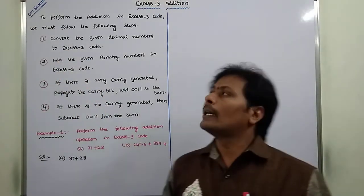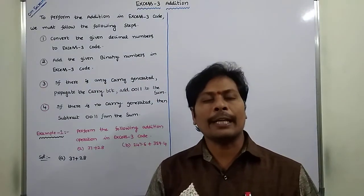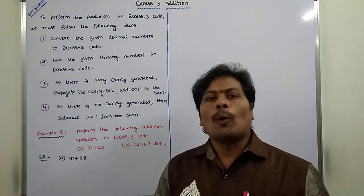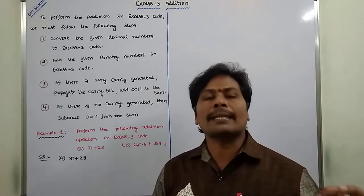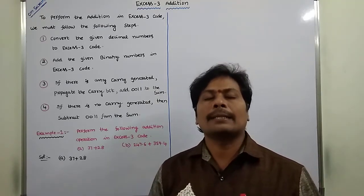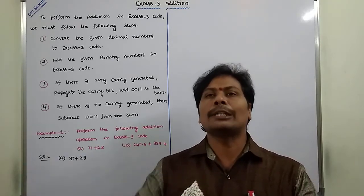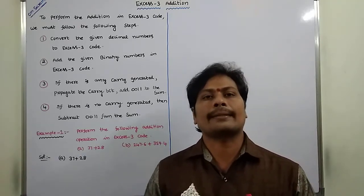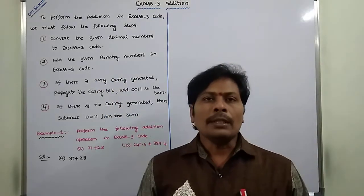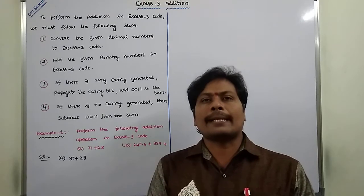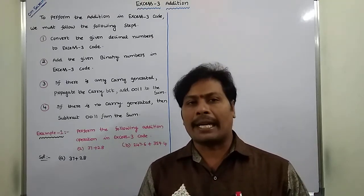First step: convert the given decimal numbers into XS3 code. That means whatever the given decimal numbers, those numbers are converted into equivalent XS3 code numbers. Second step: add the two excess-3 XS3 code numbers in binary form.